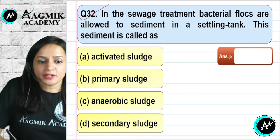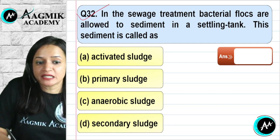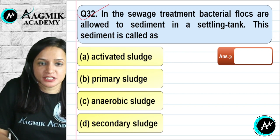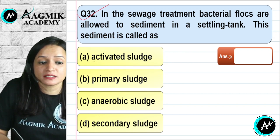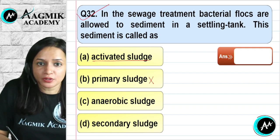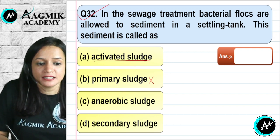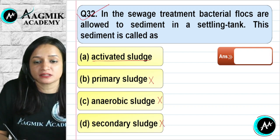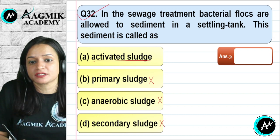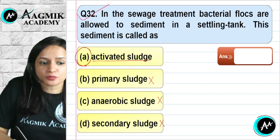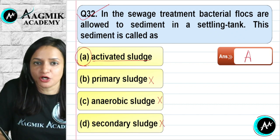Question number 32: In sewage treatment, when bacterial floc sediments in a settling tank, the sediment formed is called activated sludge. It is not called primary sludge (that was removed earlier), not anaerobic sludge, and not secondary sludge. The specific term is activated sludge. The correct option is A.